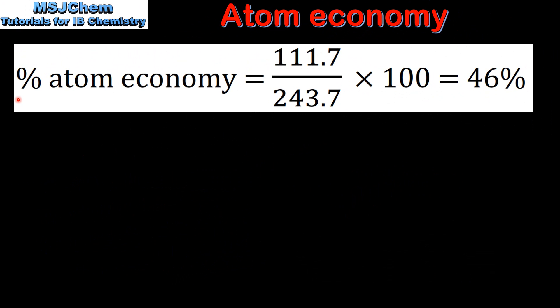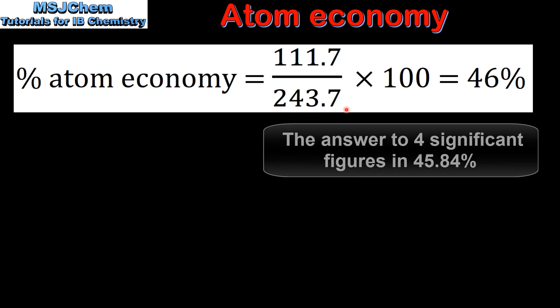Next we'll use the equation to calculate the percentage atom economy. The total of the molar masses of our desired product, which was iron, is 111.7. The total of the molar masses of the reactants was 243.7. When we do this calculation we get a percentage atom economy of 46%, which I've rounded to 2 significant figures.